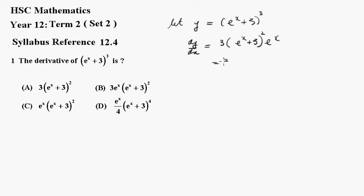So this becomes 3 e to the x times e to the x plus 3 all squared, which of course is b.